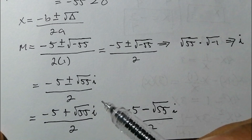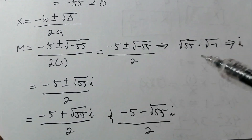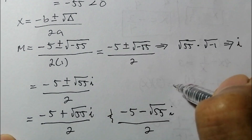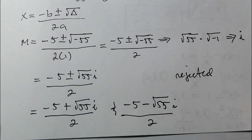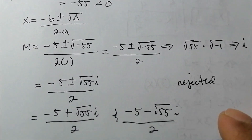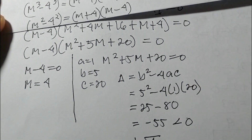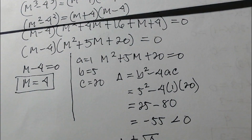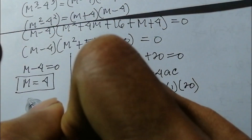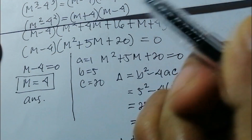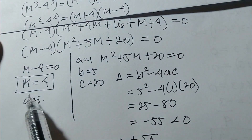In this case, the solutions are complex numbers, so they are rejected. Therefore, the only value of m is 4.